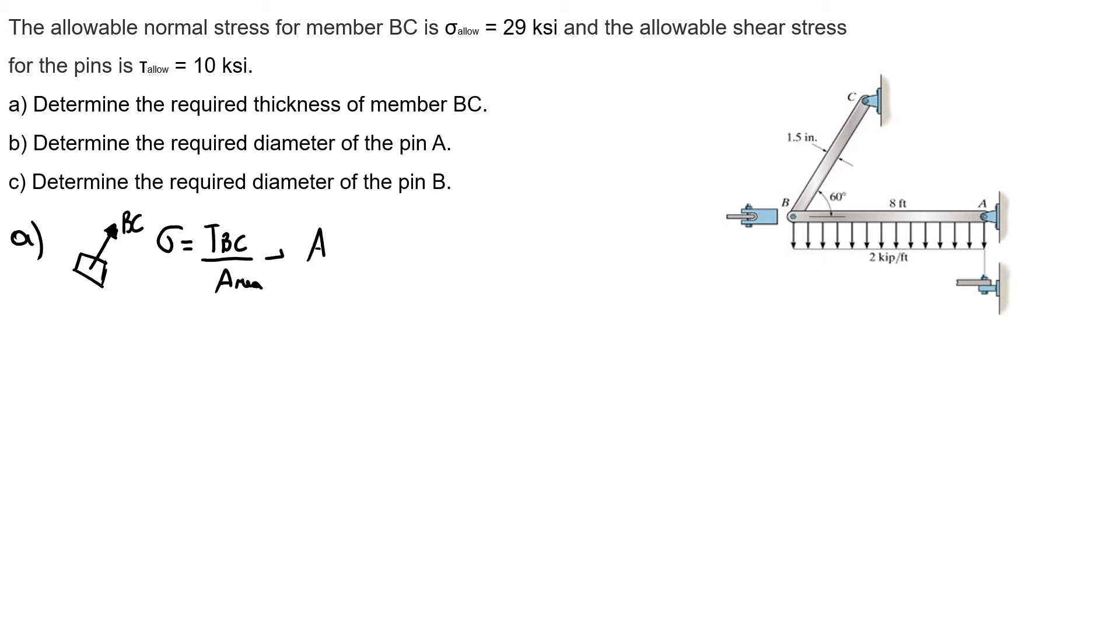So I know my area will be 9.24 kip over 29 ksi. So my area will be 0.319 inches square. But I know that my area is my thickness that I don't know times 1.5 equals 0.319. So my thickness of the member BC will be 0.319 divided by 1.5, and thickness equals 0.212 inches.